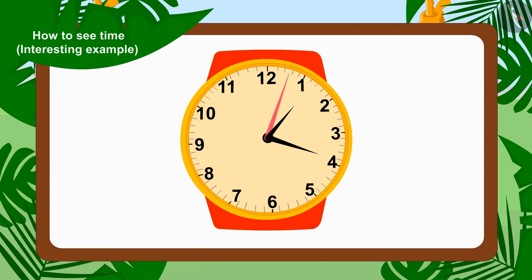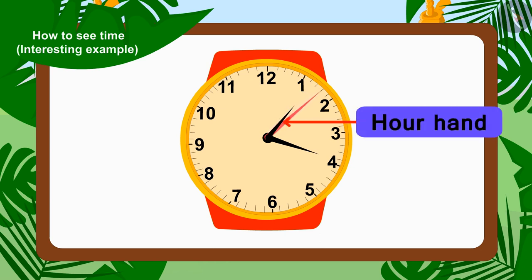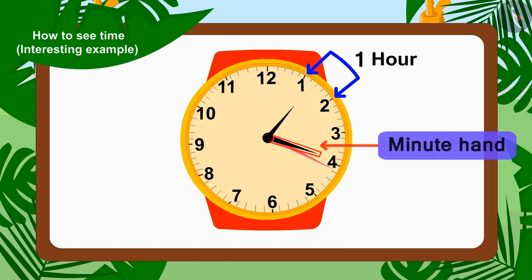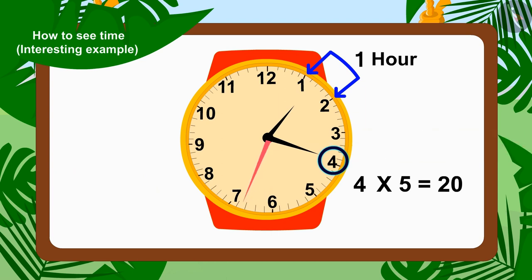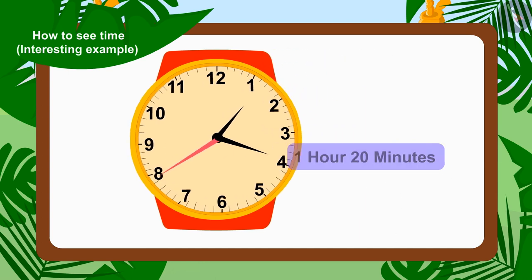Well done children, you have found the right answer. In Chanda's watch the hour needle is between one and two, so it's one hour. And the minute needle is on number four, so how many minutes does that make? Yes, four times five or twenty minutes. In this way, the time in Chanda's watch is still one hour twenty minutes.